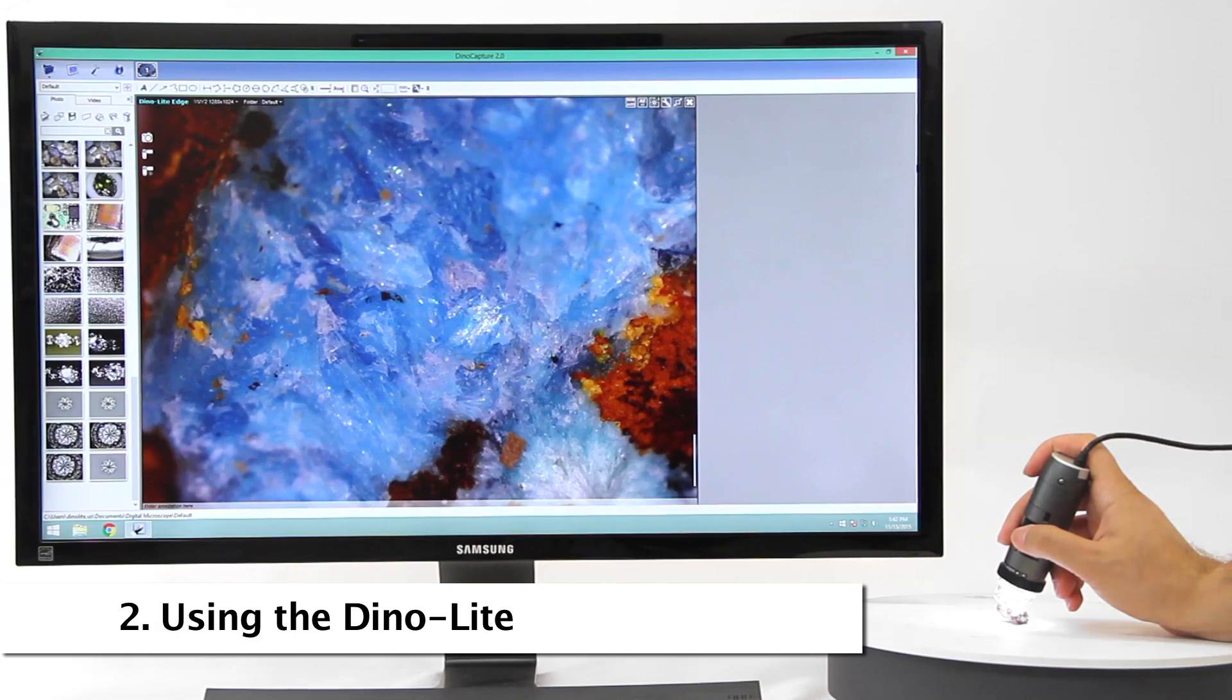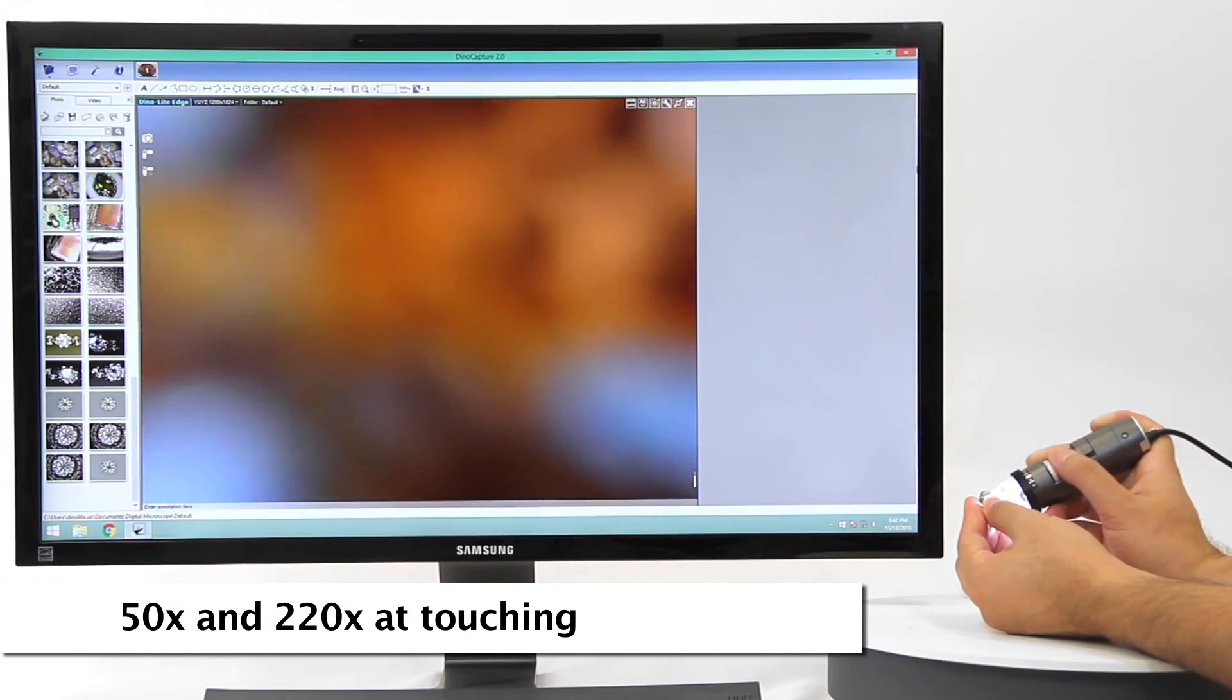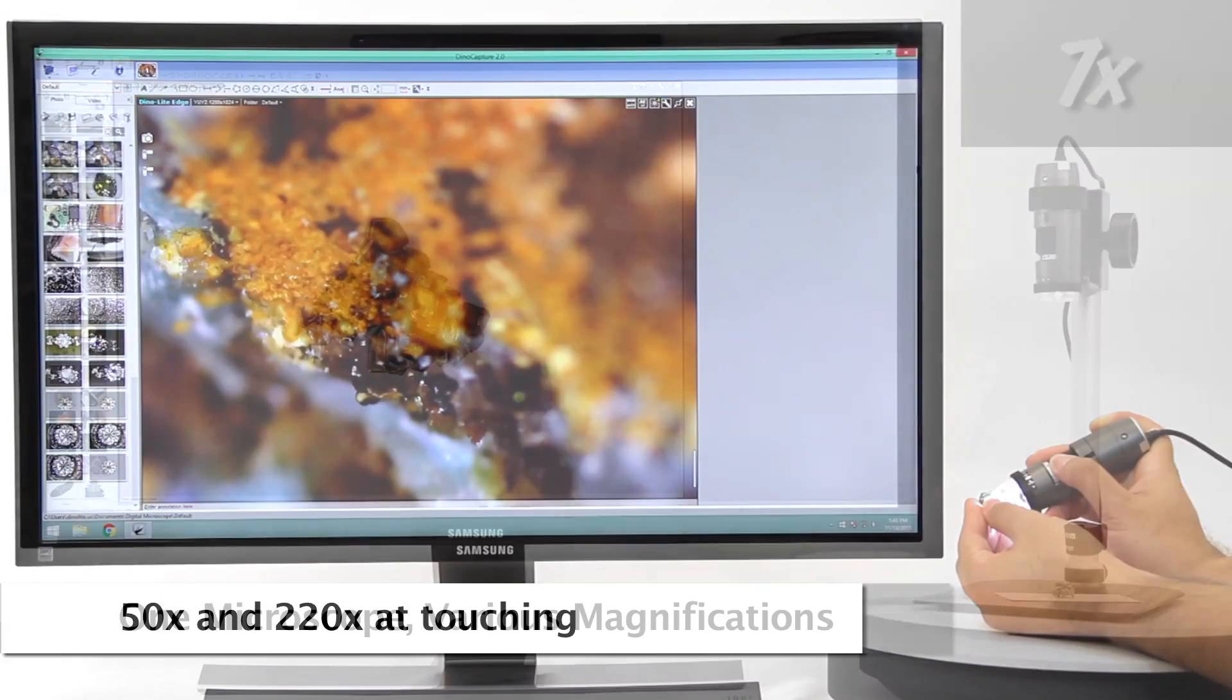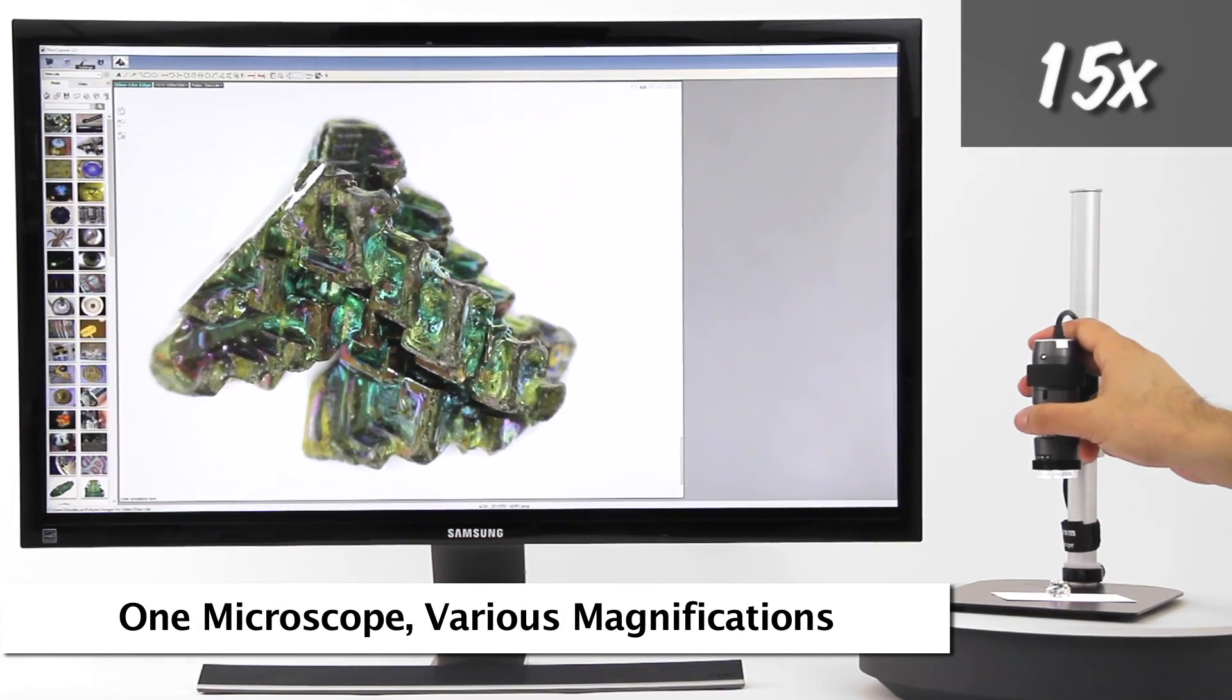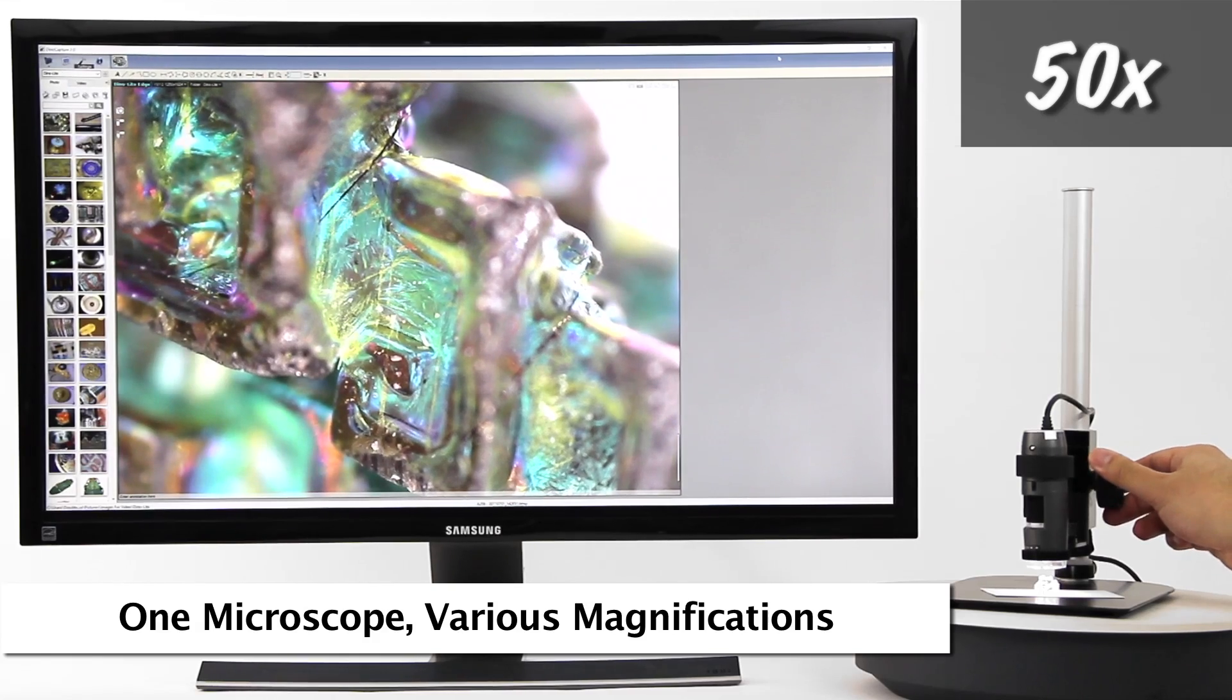Standard Dynolite working distance allows for 50 times and 220 times magnification when the end of the Dynolite nozzle is in contact with the object being viewed. This is an example of the standard working distance and corresponding magnification examples.